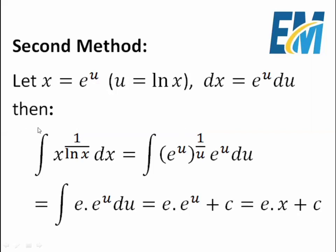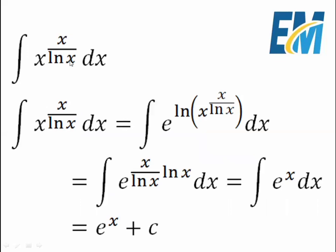Now we have performed the integral of x to the power 1 over ln x dx. Now we will perform the integral of x to the power x over ln x dx — not 1 over x. Same as the first method, x to the power x over ln x can be written as e to the power ln of the term: e to the power ln of x to the power x over ln x. We put x over ln x next to ln to get e to the power x over ln x, all multiplied by ln x. We can cancel out ln x and ln x to get e to the power x. So this integral equals the integral of e to the power x dx, which is e to the power x plus c.